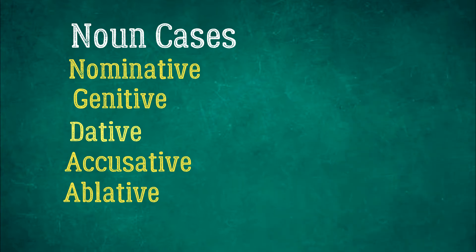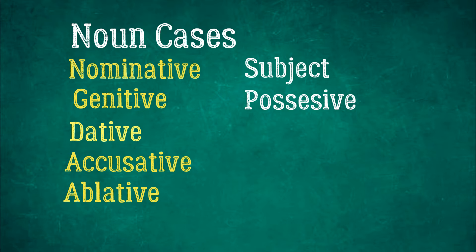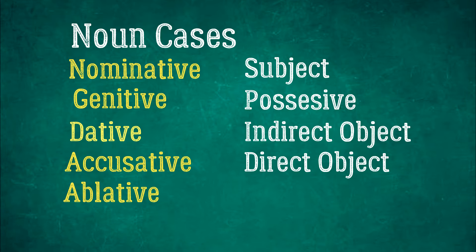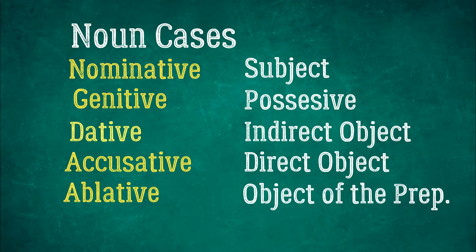So the nominative — what job does that noun do? If you said subject, you're absolutely right. Next we have genitive. Genitive is the possessive case, or possessive job. So when we have a noun that has a possessive nature to it, like we say 'Mark's bicycle' or something like that, it takes on a possessive tone. Genitive is possessive. Dative — if you said indirect object, you are absolutely right. Dative is the indirect object. That means accusative must be the direct object. And then lastly, ablative is the object of the preposition.